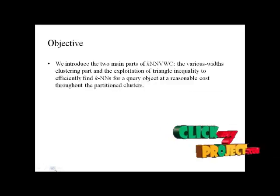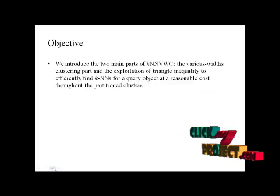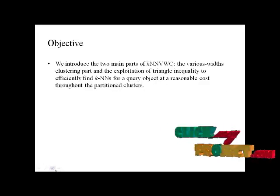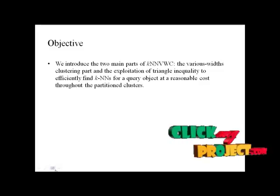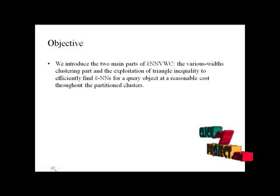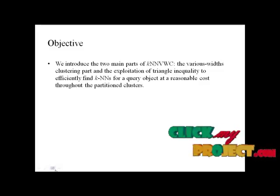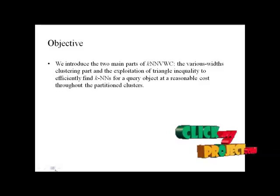The main objective of the process is to introduce two main modes of KNN-VWC: various width clustering, and exploitation of the triangle inequality to efficiently find K-nearest neighbors for a query object at a reasonable cost throughout the partitioned clusters.